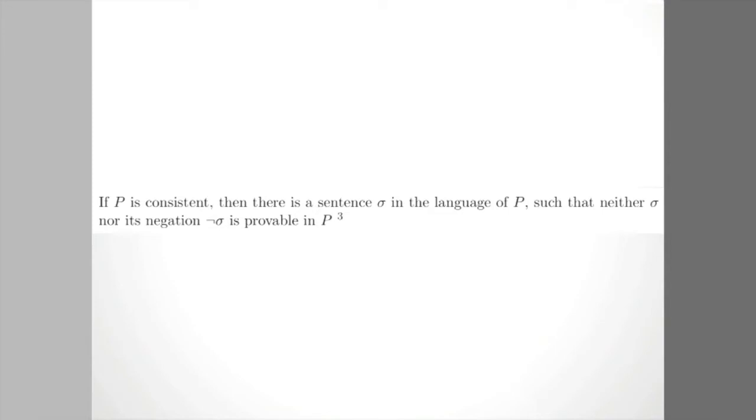Here we have Gödel's first incompleteness theorem. If P is consistent, then there is a sentence sigma in the language of P such that neither sigma nor its negation, not sigma, is provable in P. What this says is that if a theory, namely P, is consistent, then it must necessarily not be complete, in that sigma cannot be evaluated to be valid or invalid.